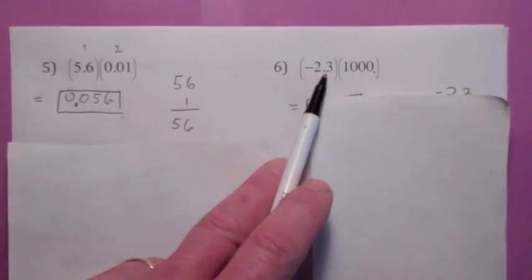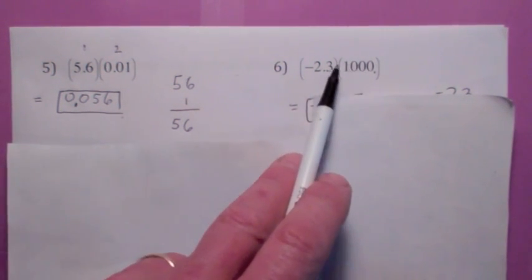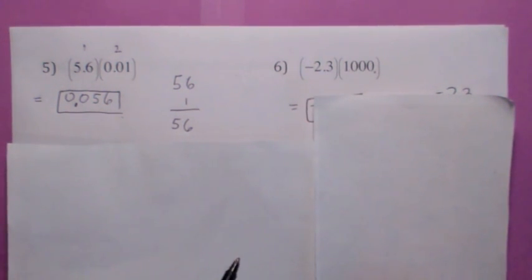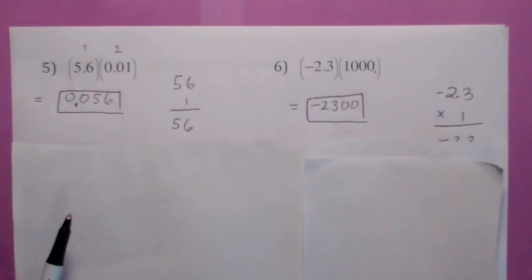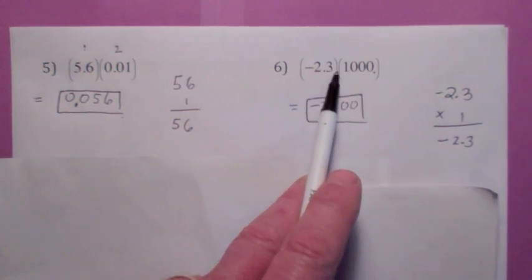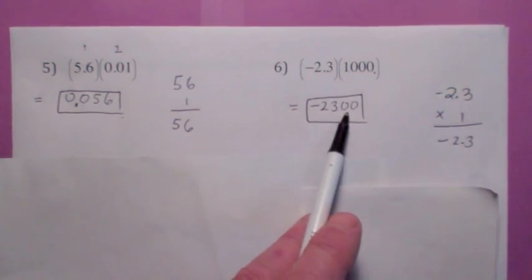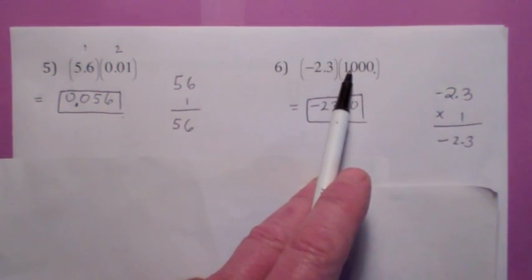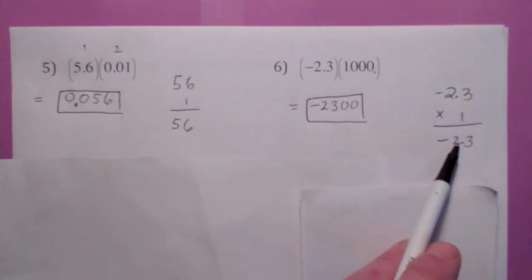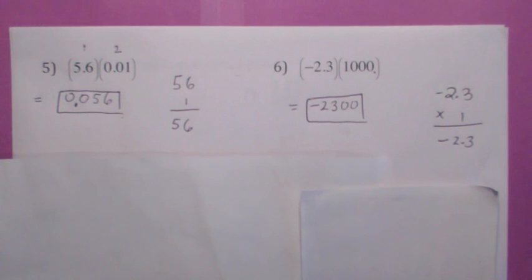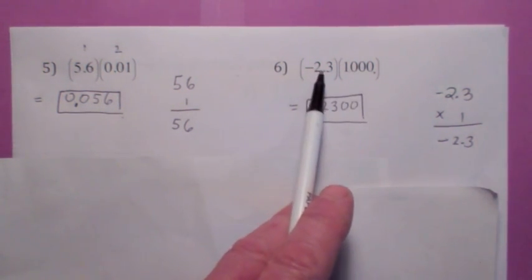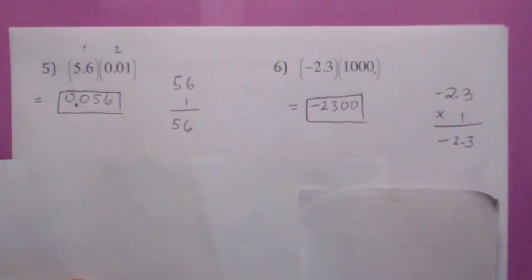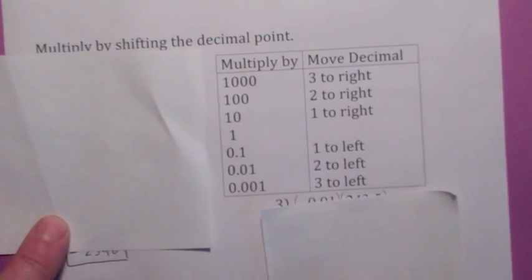Now over here: when you multiply negative 2.3 times 1,000, that's going to make it bigger, moving the decimal to the right. If you pretend this is a 1, you get negative 2.3 times 1. Since you pretended it was a 1, you moved the decimal 3 to the left — to counterbalance, move it 3 back to the right. So multiplying by 1,000 moves the decimal 3 to the right.